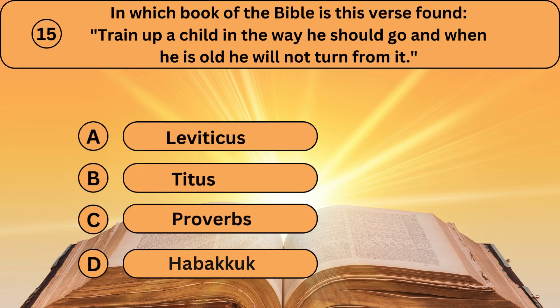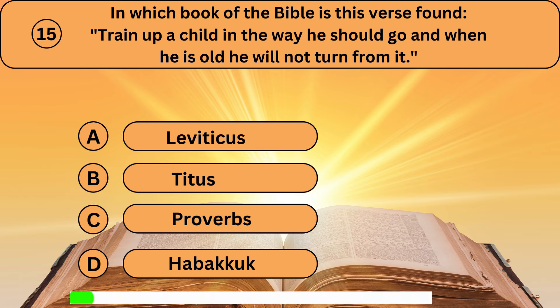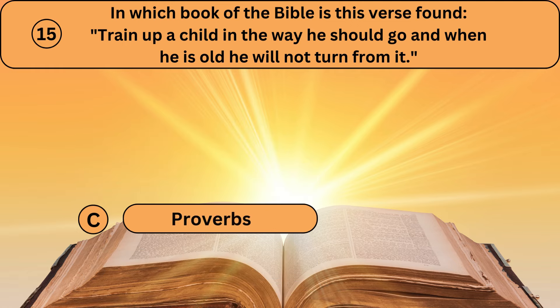Question fifteen. In which book of the Bible is this verse found? 'Train up a child in the way he should go, and when he is old, he will not turn from it.' A. Leviticus. B. Titus. C. Proverbs. D. Habakkuk. Proverbs is the right answer.